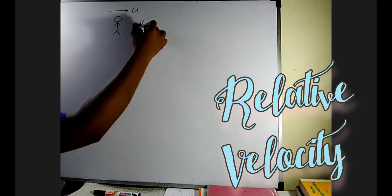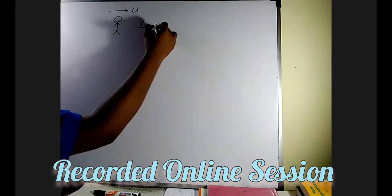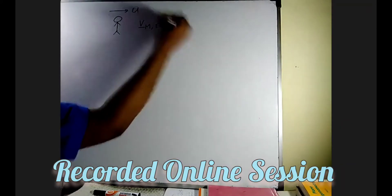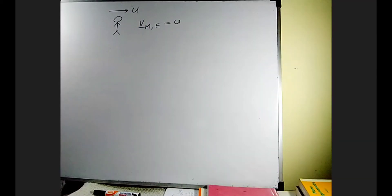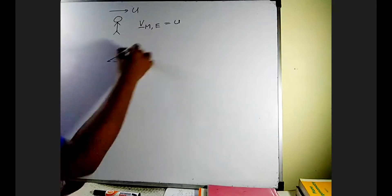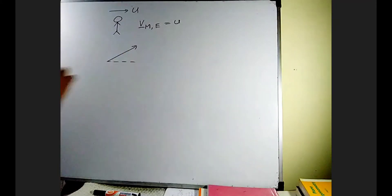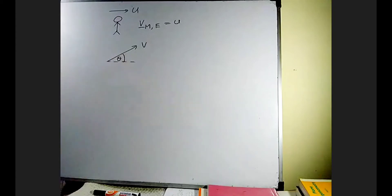The velocity of a man with respect to earth is u, directed to the right-hand side. There is a wind blowing in the horizontal direction at velocity v, making an angle theta with the horizontal.